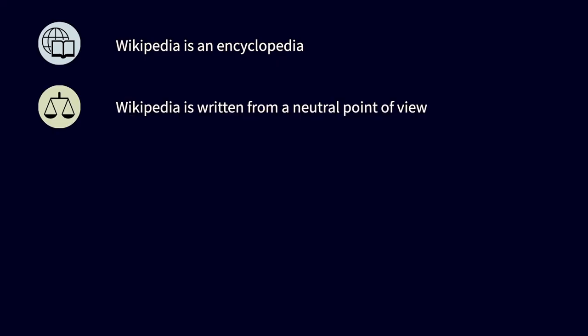Number two: Wikipedia is written from a neutral point of view, so we don't promote one point of view over another. And we do that through the type of language we use, through accuracy and through balance.